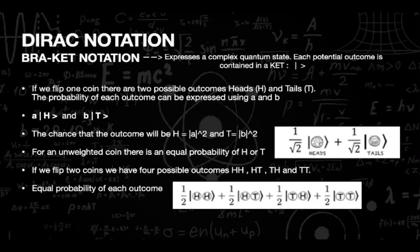Similarly, if we flip two coins, we have four possible outcomes: heads-heads, heads-tails, tails-heads, and tails-tails. There will be four variables here — a, b, c, and d — and the values of each will be 1/2 for the outcome of the respective case inside a ket. The sum |a|² + |b|² + |c|² + |d|² will equal 1.